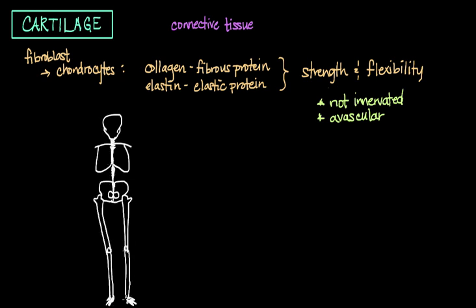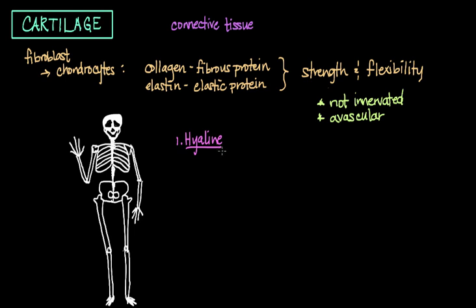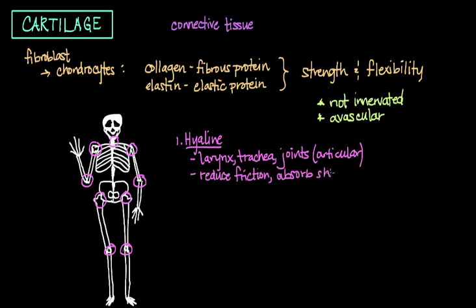There are three main types of cartilage found within the body. The first type is called hyaline cartilage. You can find hyaline cartilage in the larynx, trachea, and throat, and also in all of the joints where the surfaces of bones are articulating with each other. This is called articular cartilage. The main purpose of hyaline cartilage is to reduce friction and absorb shock.